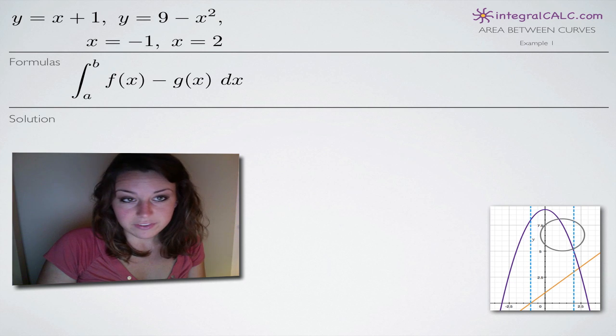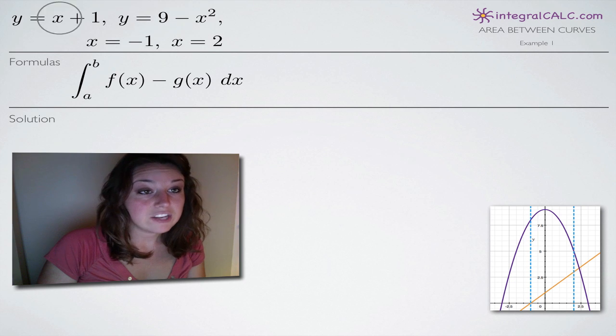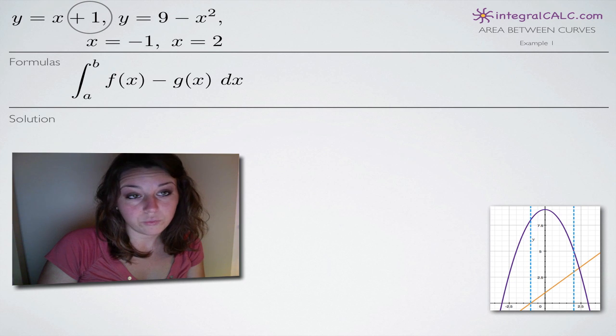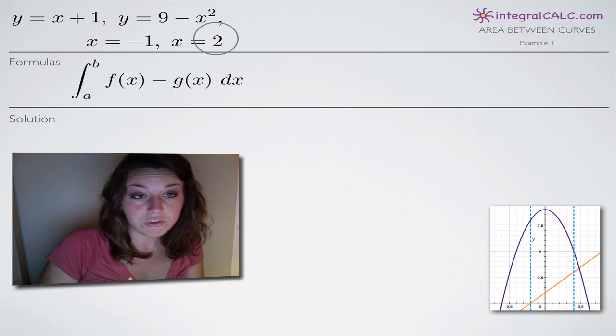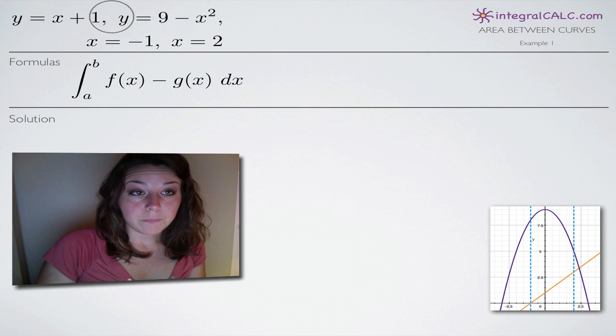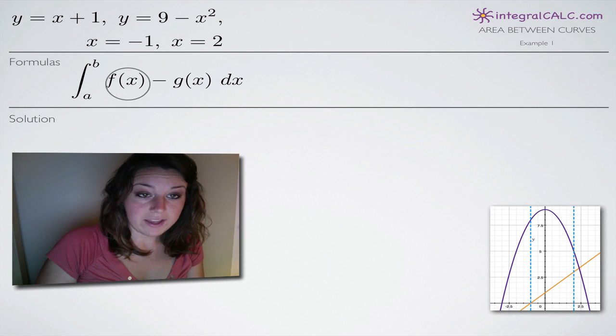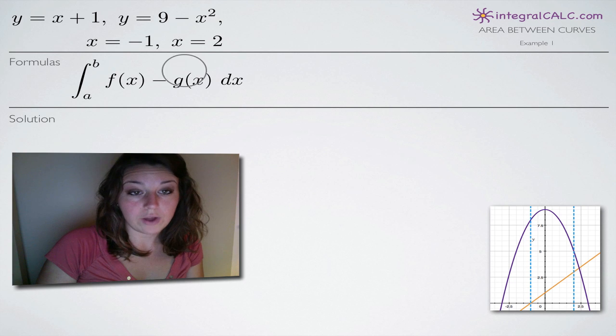So that gives us an indication that f of x is going to be 9 minus x squared and g of x is going to be x plus 1. The other way you could figure this out is plug in any number that's between negative 1 and 2, like 0 or 1, and plug into both functions and whichever one is higher will be f of x and the lower one will be g of x.